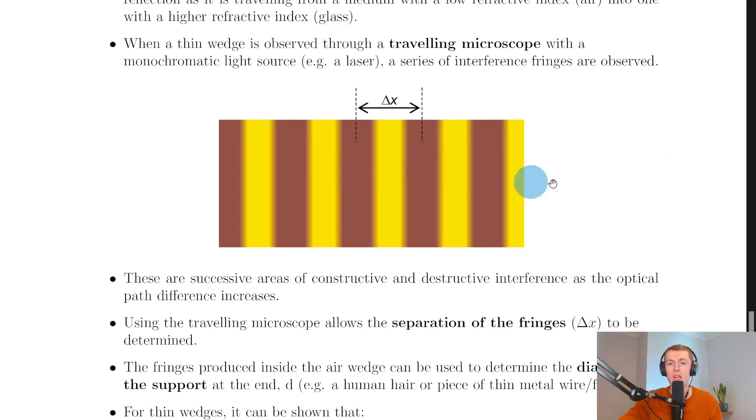Hopefully that makes sense. Just to recap, if you're measuring the distance across multiple fringes to find Δx then you can find Δx by dividing by the number of gaps between the fringes not the total number of fringes.